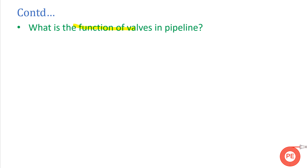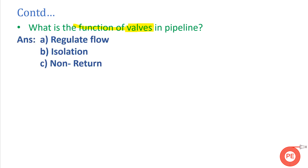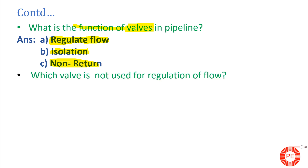The next question is: what is the function of valves? Valves regulate the flow, isolate the flow, make flow uni-directional, or are used for non-return regulation — meaning they can throttle the flow. If you want to throttle flow to less than full flow, you use a control valve. If you want to isolate the system, use an isolation valve. If you want to prevent flow from returning, use a non-return valve.